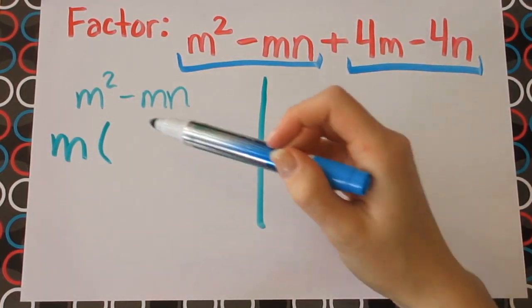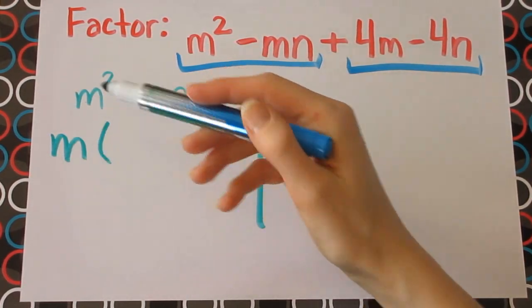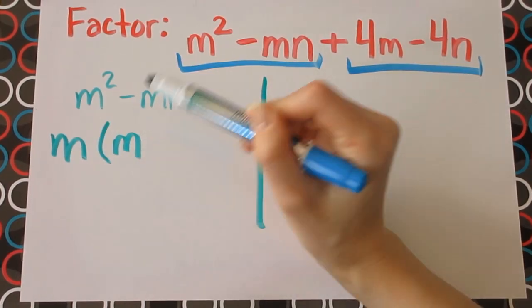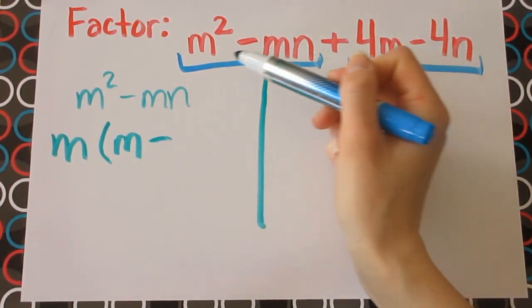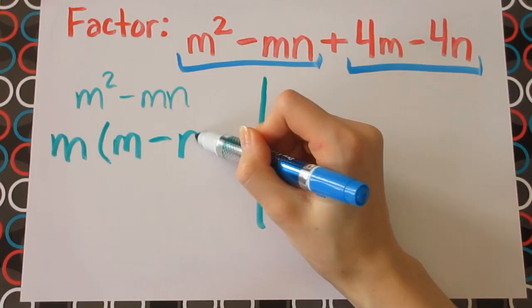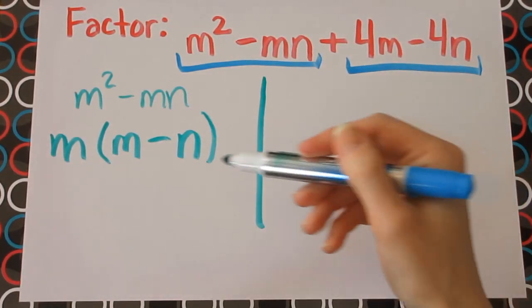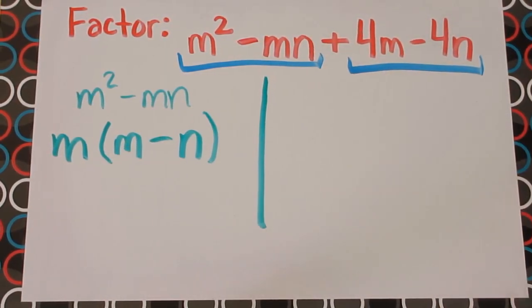So we'll write the m and when you factor out the m, m squared divided by m is just a single m and mn divided by m will just leave you with n. So this is as far as we can go here in this side of the equation.